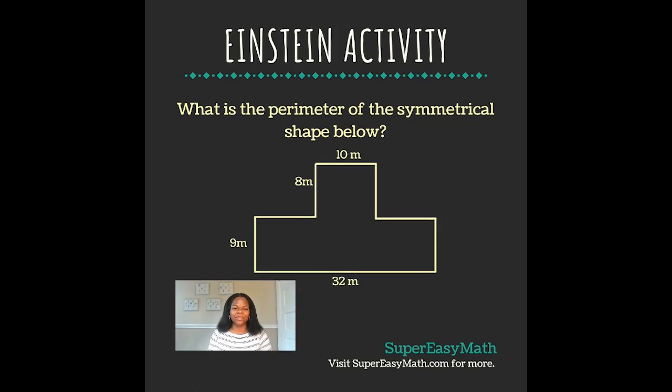Hey guys, it's Tiffany from Super Easy Math. Today's Einstein Activity says what is the perimeter of the symmetrical shape below? Well, because the shape is symmetrical, I know that this length is going to be the exact same as this length.